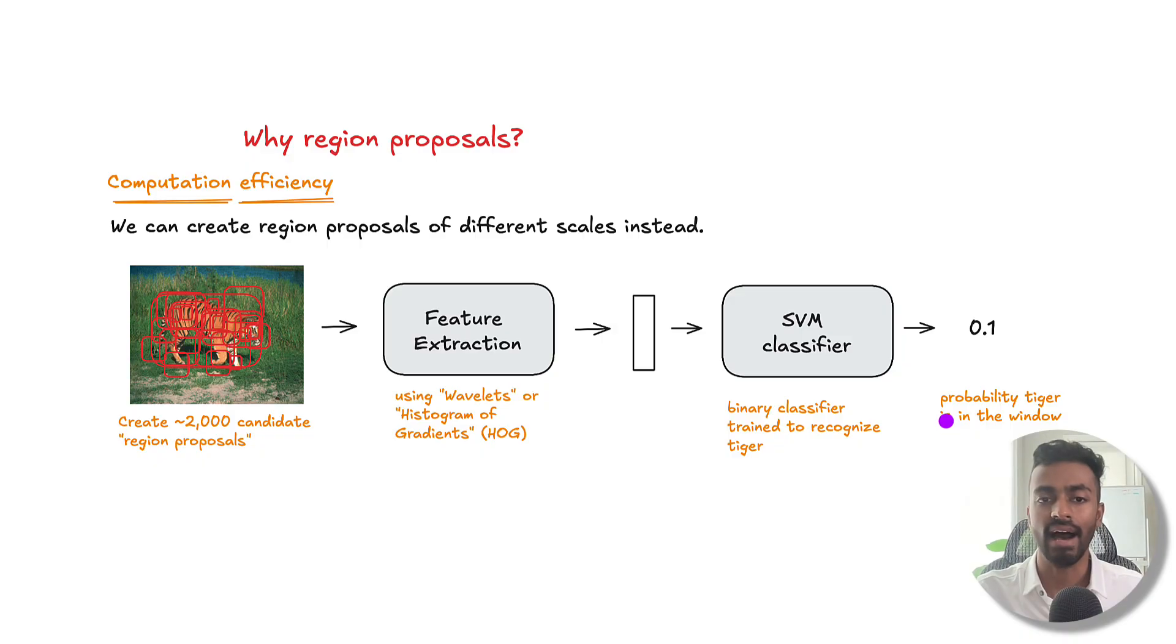We'll then pipe them into an SVM classifier in order to detect if there's a tiger or any object of interest in that window. And so this entire sequence of steps is going to be executed a fixed number of times only regardless of the image size. And hence it scales quite efficiently.